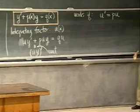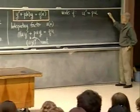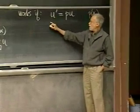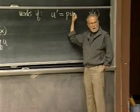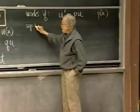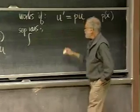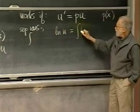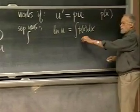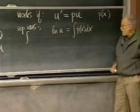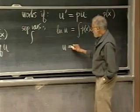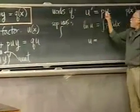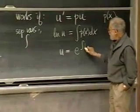So u prime equals p(x) times u. We can solve that by separation of variables: du/u equals p(x)·dx. Integrating both sides gives log(u) equals the integral of p(x)dx. Therefore u equals e to the integral of p(x)dx. That's the formula for our integrating factor. In differential equations things can get complicated, but in a week or two you'll think of this as an extremely simple formula. We can always write an integrating factor — don't worry about the arbitrary constant since we only need one such u.